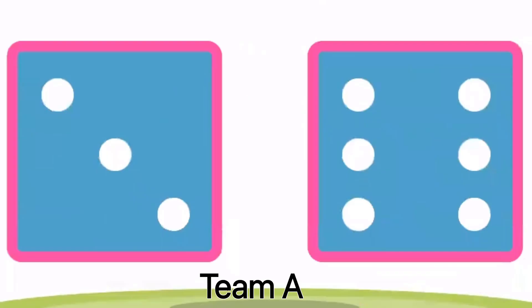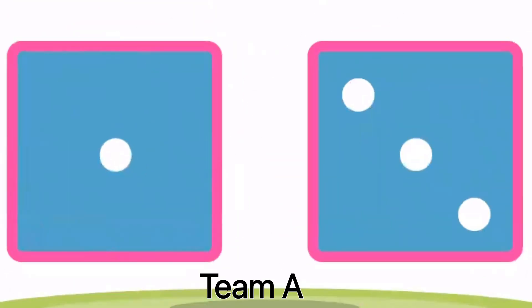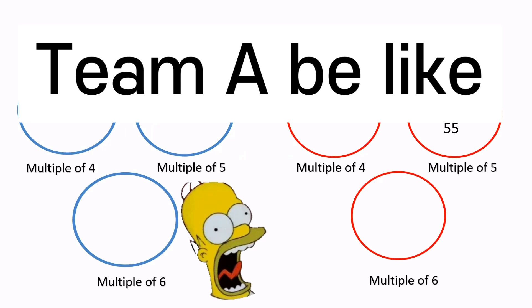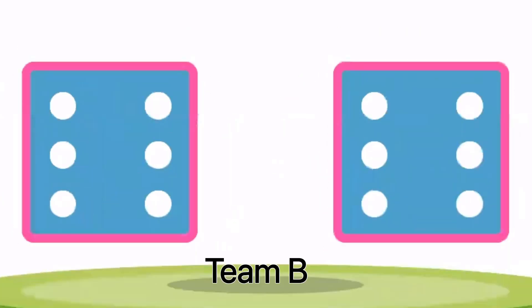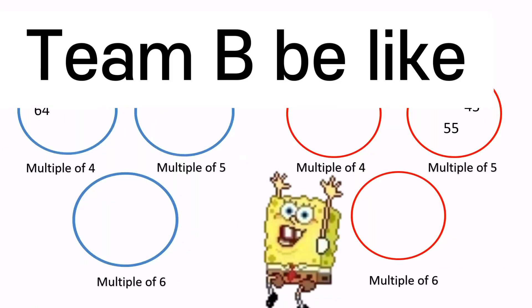And the last round for today, round five. One and three — thirteen or thirty-one is not a multiple of four, five, or six, so thirteen will not go anywhere. Sixty-six is a multiple of six, so sixty-six can be written in the circle of six.